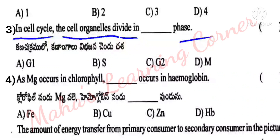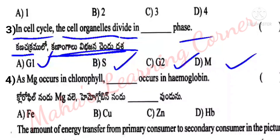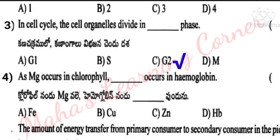Next question: In the cell cycle, X is which phase? Options: A. G1, B. S, C. G2, D. M. Correct answer: Option C, G2 is the correct answer.